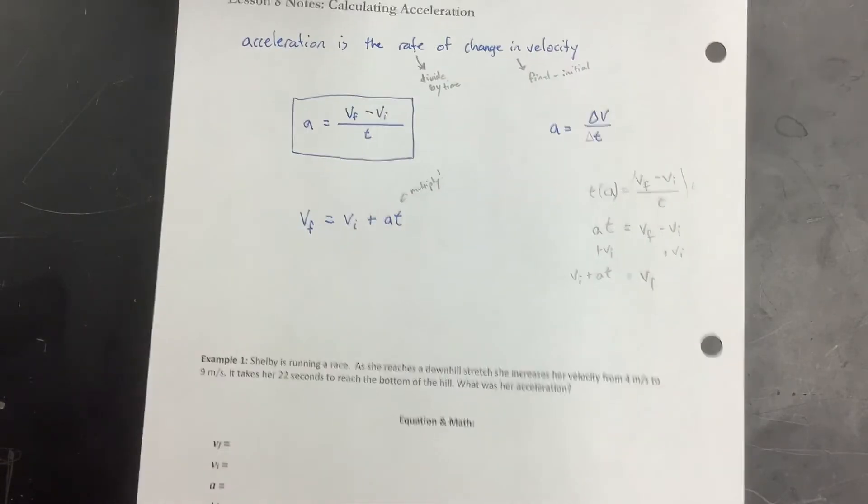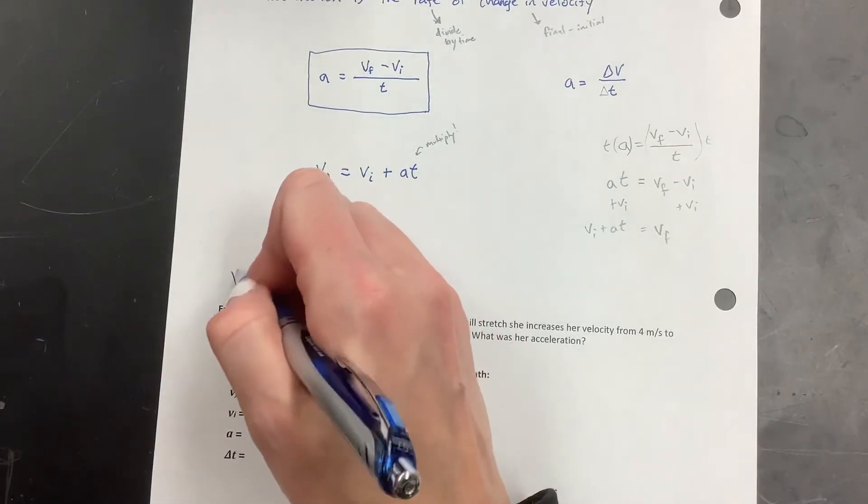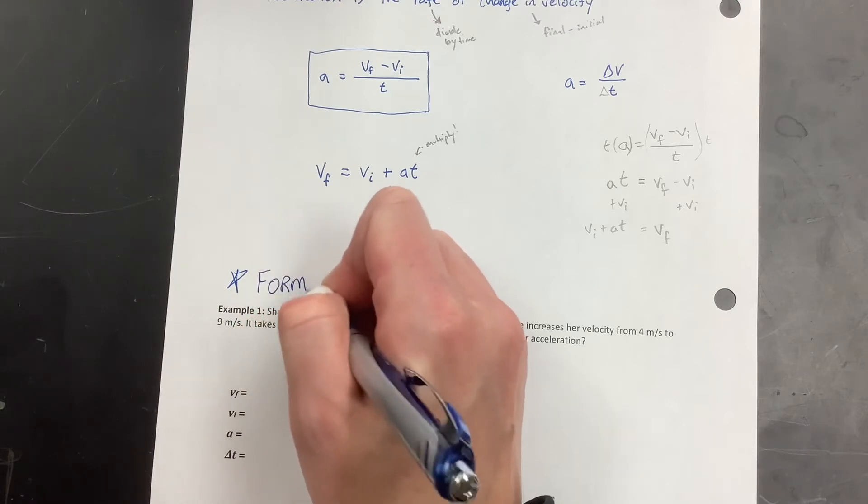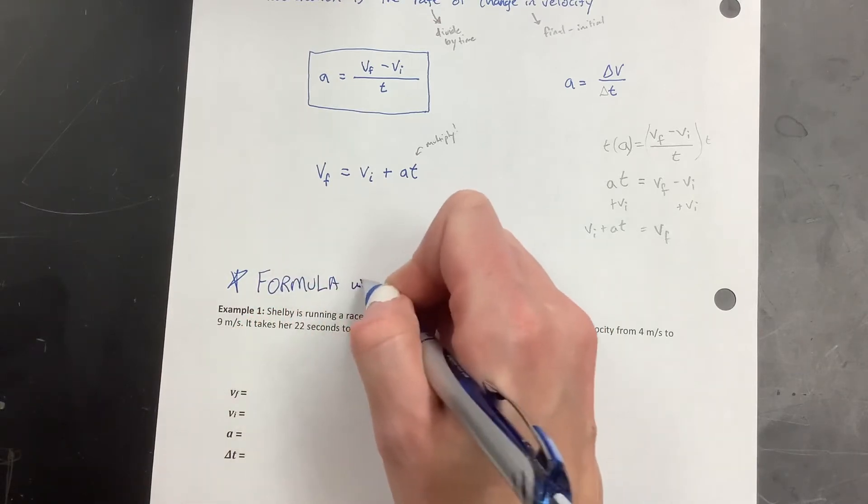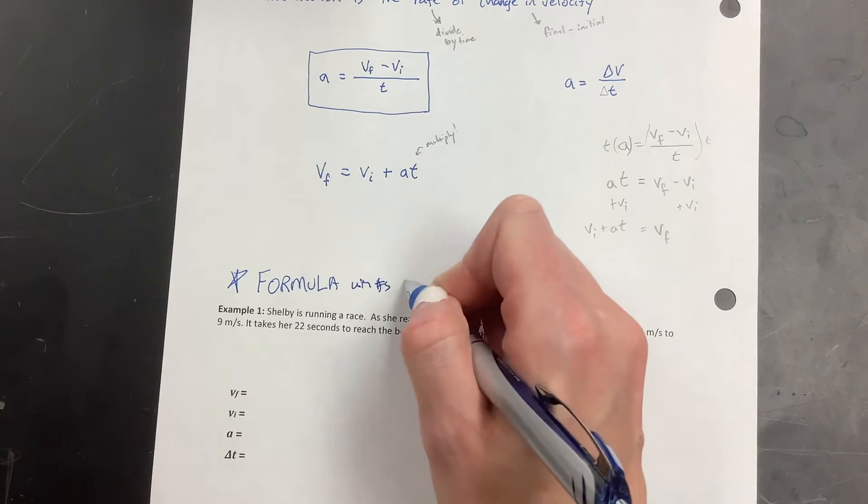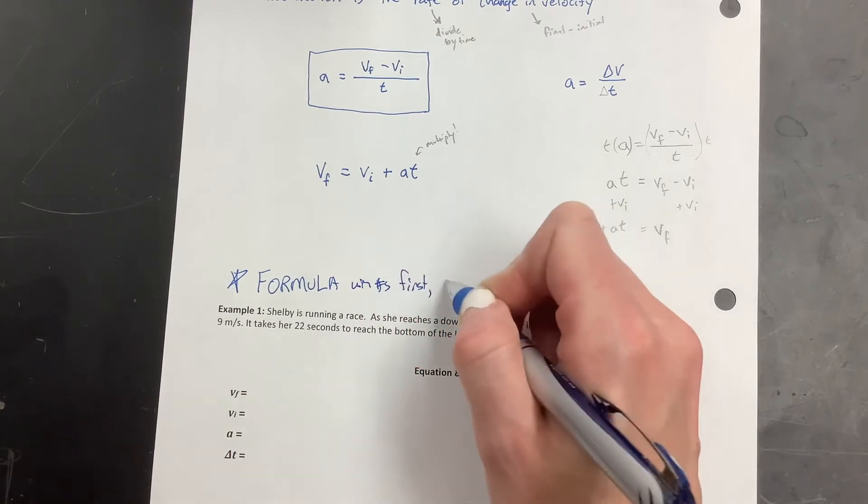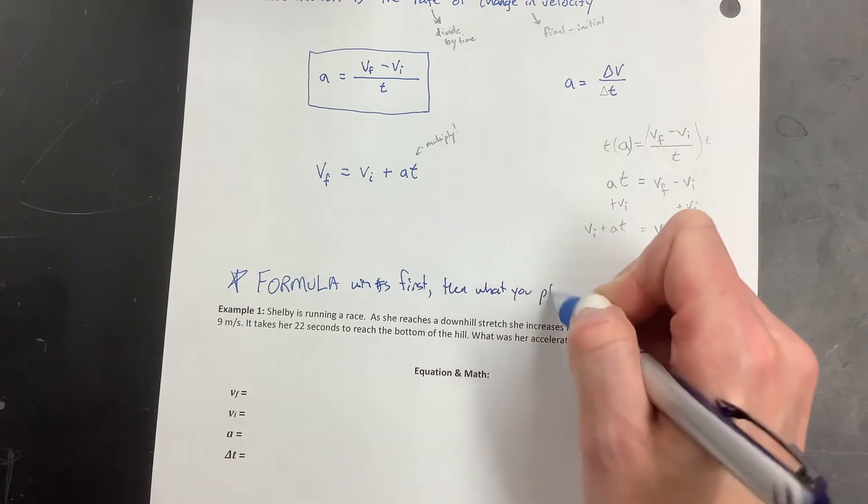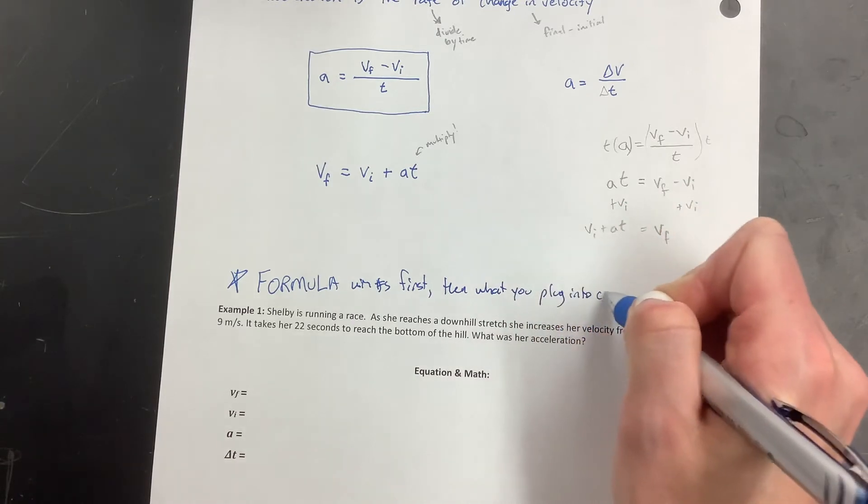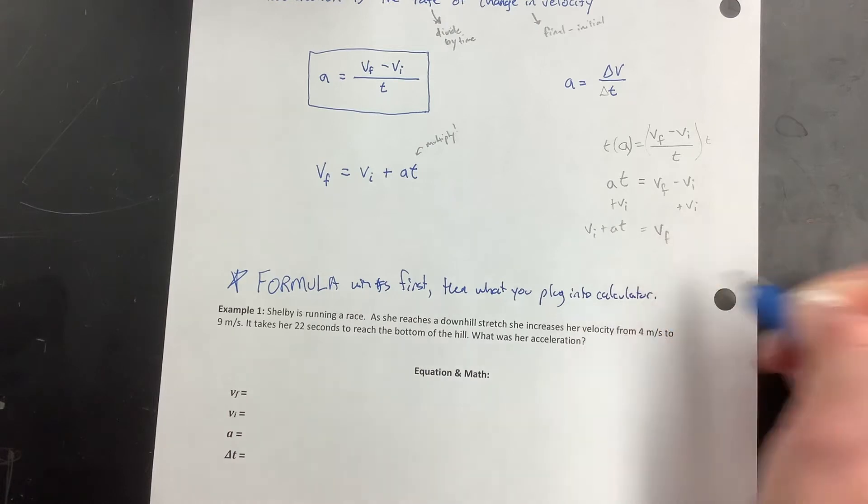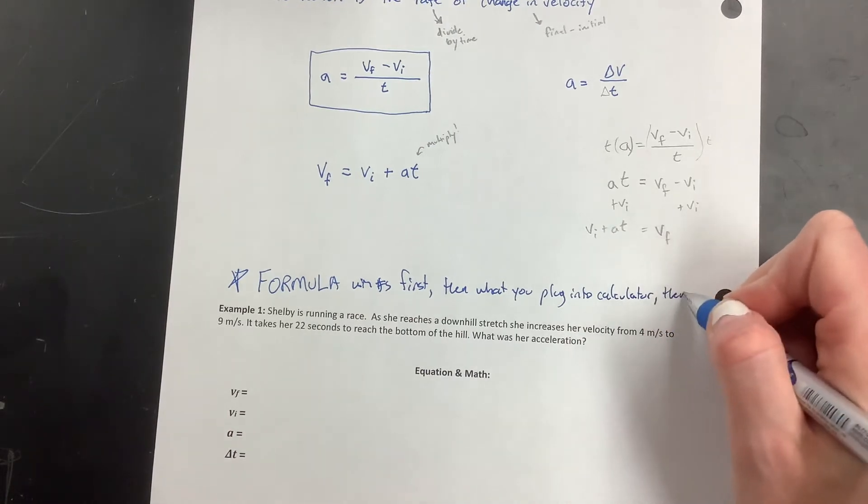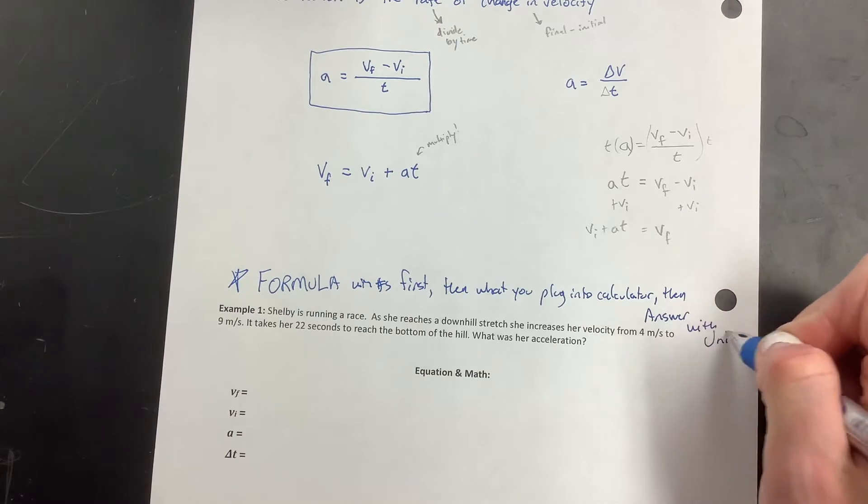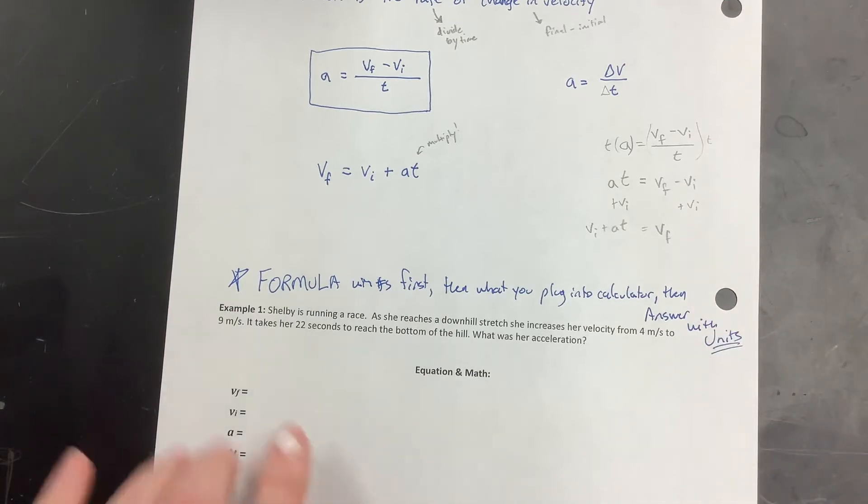Okay, so the rest of this works just like we did in the constant velocity note. You have to write the formula without numbers first. Then what you're going to plug into the calculator. Not what you get out of the calculator, what you plug into the calculator. And then your answer, I ran out of room, with units. All right, so let's practice.